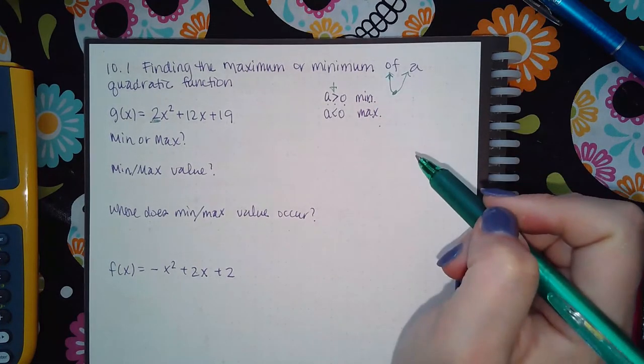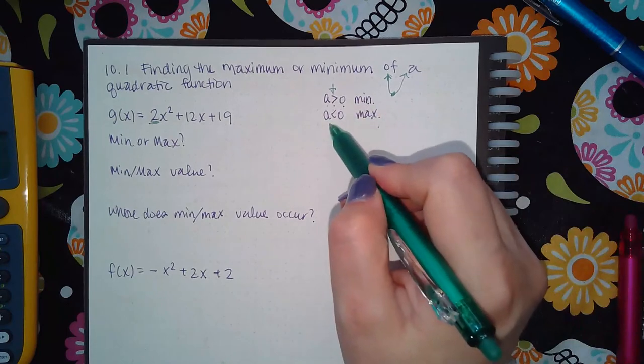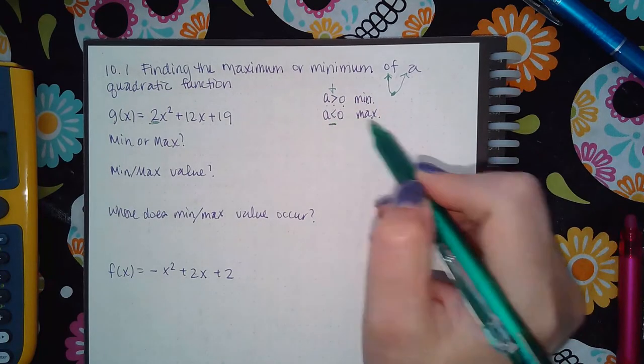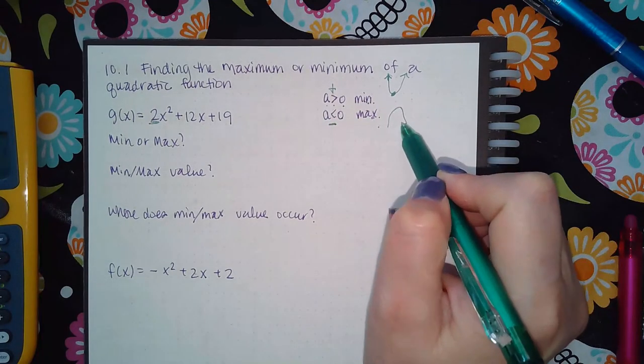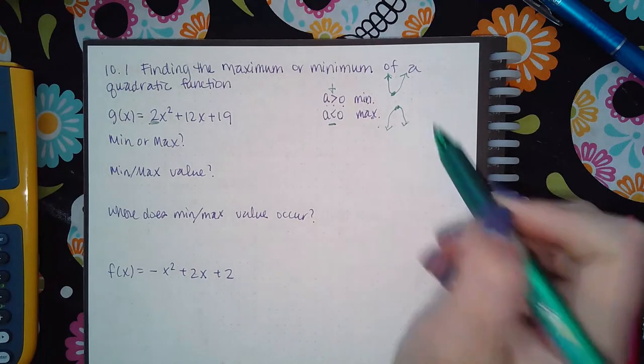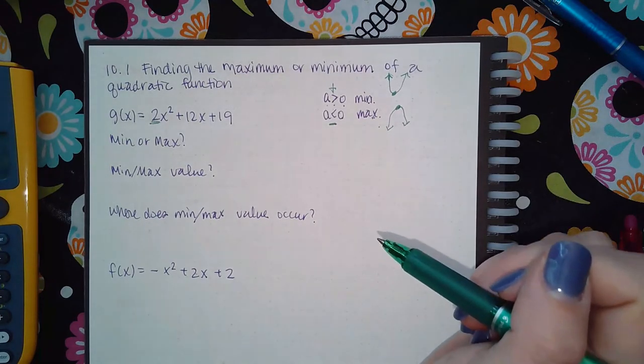The vertex is going to be the low point, the minimum. If the a is negative, less than zero, then the parabola is going to be opening downward and so the vertex up there is a peak, which means it'll be a maximum.